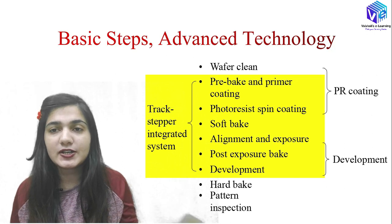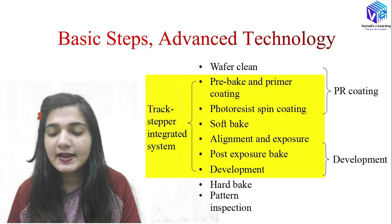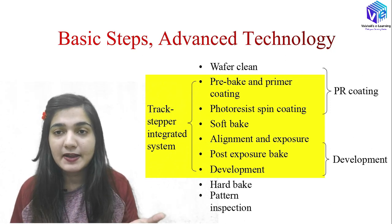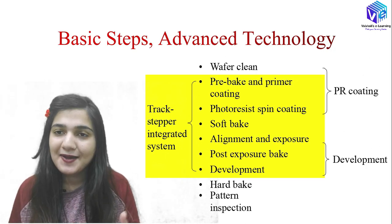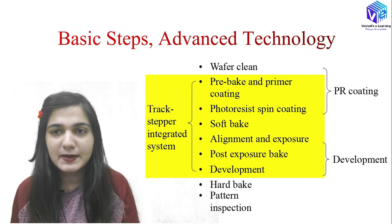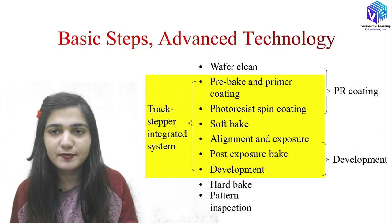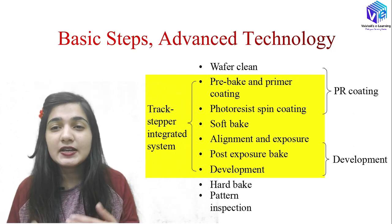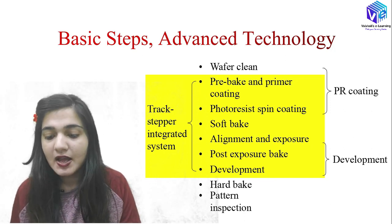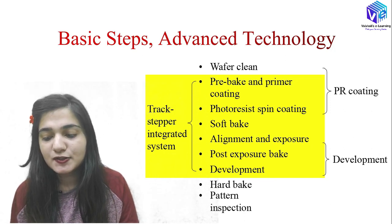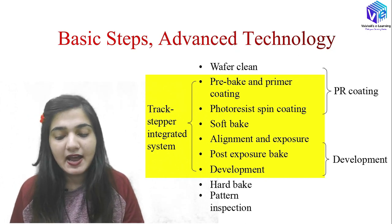In the PR coating, we are coating one layer of photoresist on the wafer. We have pre-bake and primer coating — we apply the primer so that the adhesion power of the photoresist will be made high. Then we have the photoresist spin coating, followed by soft bake. Soft bake is done to increase the hardness of the photoresist; otherwise it's a liquid type of material and it will flow off the wafer. Then we have the alignment and exposure as a different step, followed by post exposure bake and the development phase.